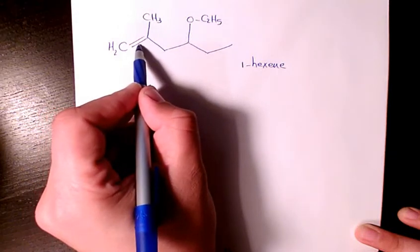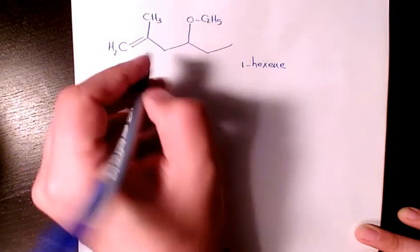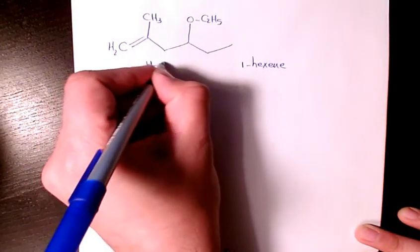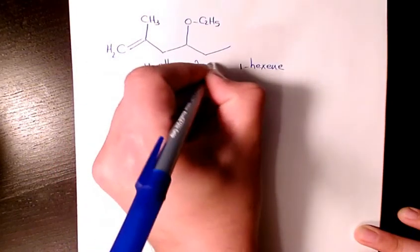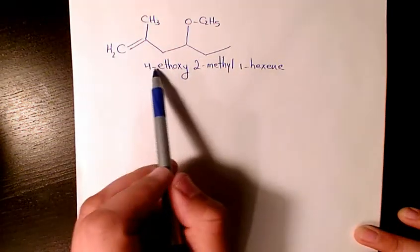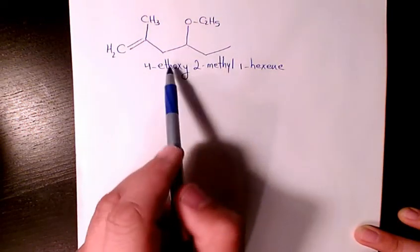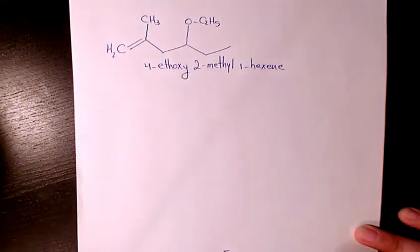We have 2-methyl and 4-ethoxy, so we're going to call it 4-ethoxy-2-methyl-1-hexyne. So 4-ethoxy-2-methyl-1-hexyne—that's going to be the name of this organic compound.